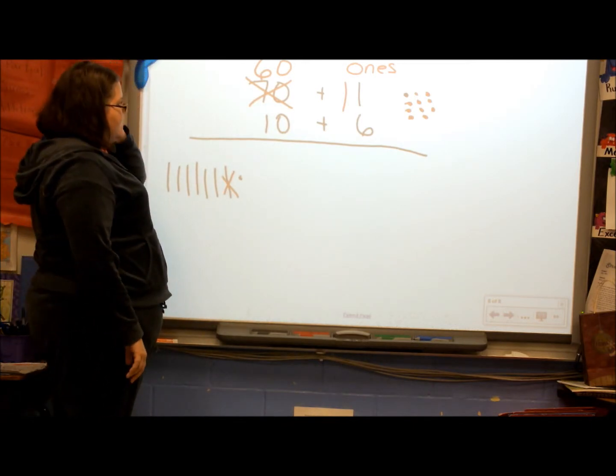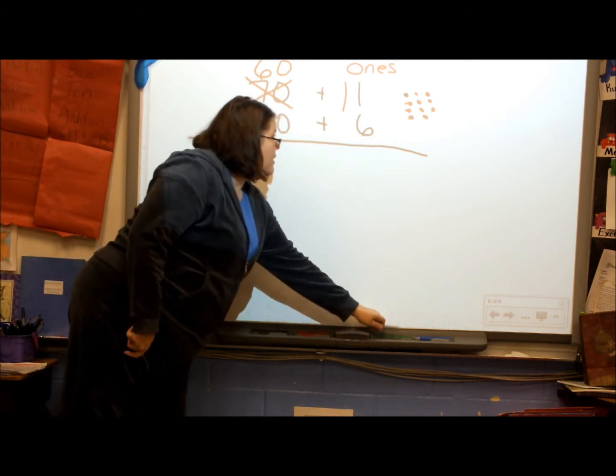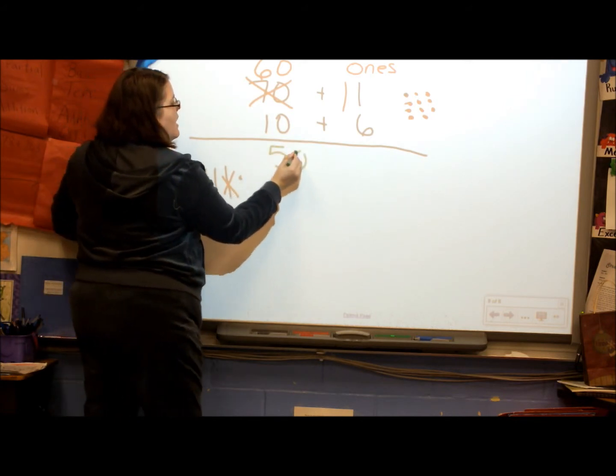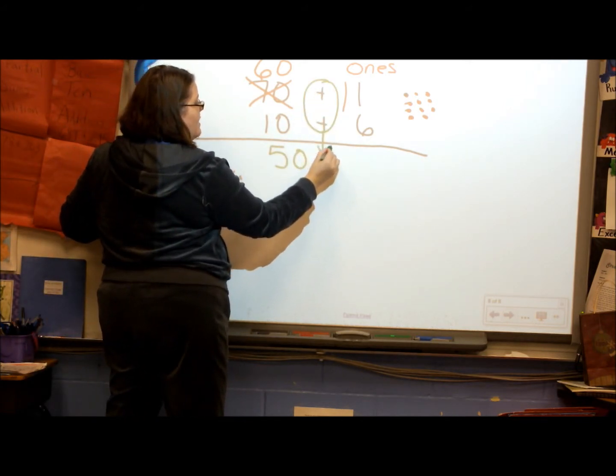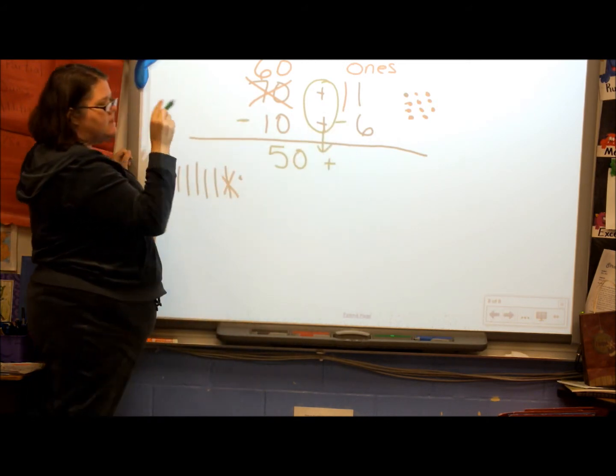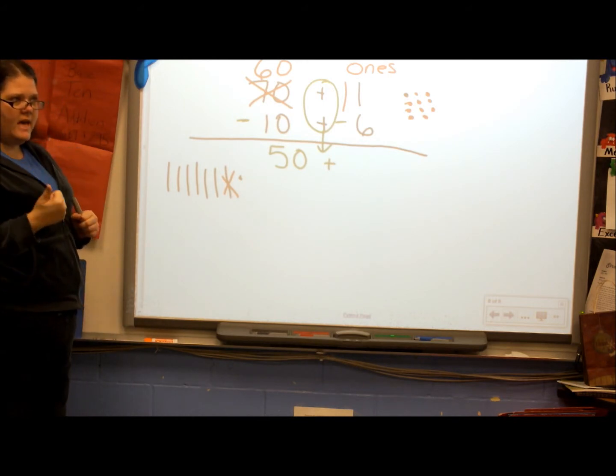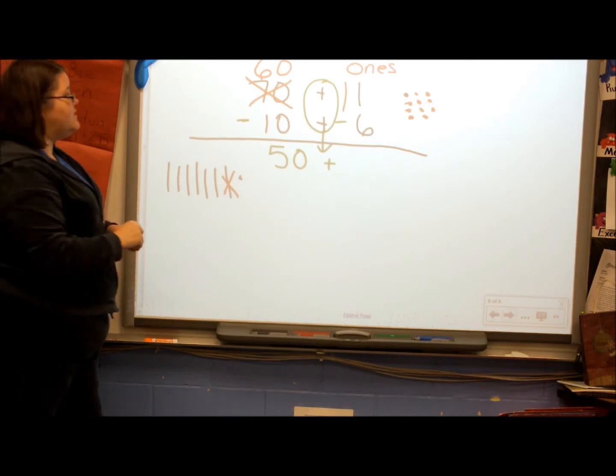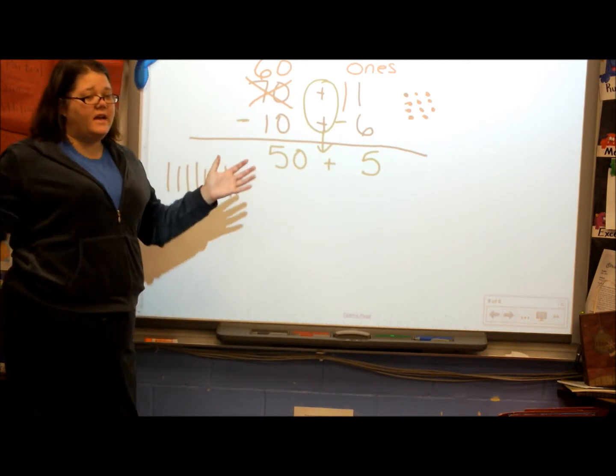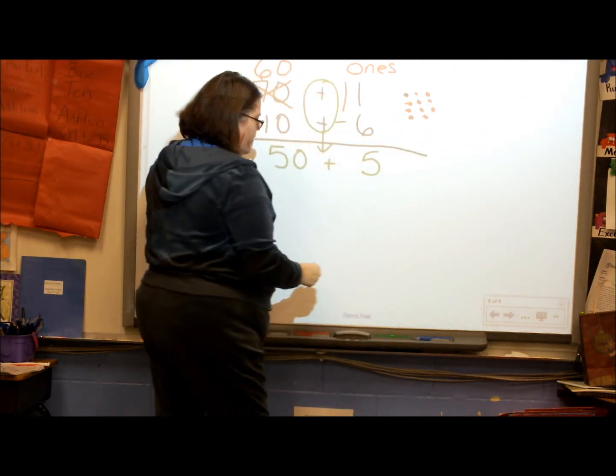But here's my question. Is it just 6 take away 10, or is it 60 take away 10? 60 take away 10. How many left? 50. Great job. I'm going to carry the plus sign down to the bottom. And I'm subtracting the tops. So, 11 take away 6. I'm going to count backwards until I get to 6. 11, 10, 9, 8, 7, 6. That's 5. So, when I squish 50 plus 5 together, what's my answer? 55.